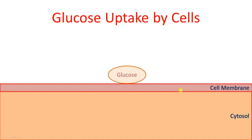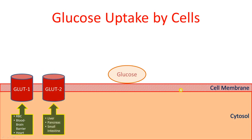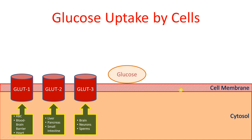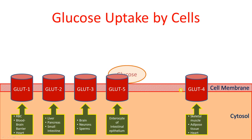The glucose transporters are: GLUT1, present in RBCs, the blood-brain barrier, and to some extent in the heart; GLUT2, present in the liver, pancreas, and small intestine; GLUT3, present in the brain, neurons, and sperms; GLUT5, present in the enterocytes of the intestinal epithelium — on the luminal side of the intestine; and GLUT4, present in skeletal muscle, adipose tissue, and heart.